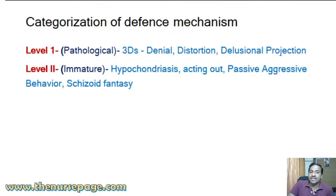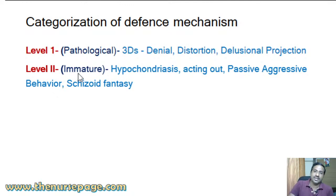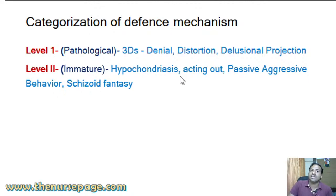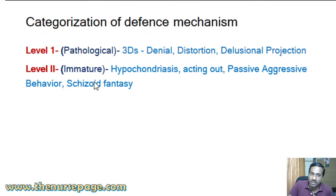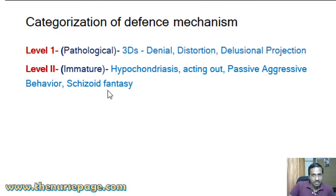Level two includes immature defense mechanisms. Examples for immature defense mechanisms are hypochondriasis, acting out, passive aggressive behavior, and schizoid fantasy.